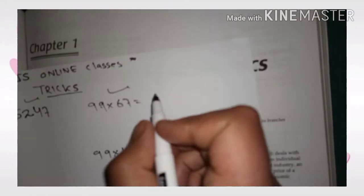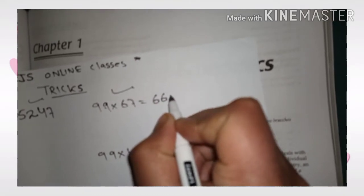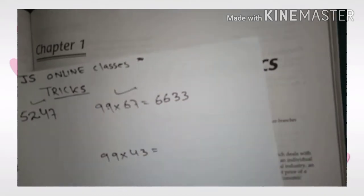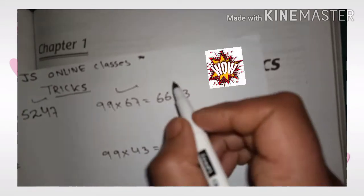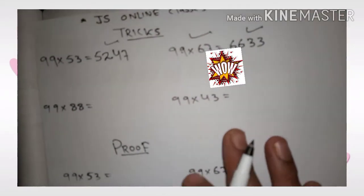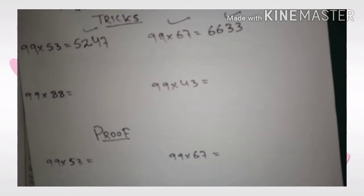Another example: suppose I take 99 into 67. So its answer will be in seconds, that is 6633. Yes, it is the answer. Is it interesting? Now, I am going to show you two more examples and then I will show its proof.